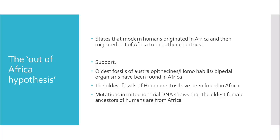Then we get to the out-of-Africa hypothesis, which states that modern humans originated in Africa and then migrated to other countries. Support includes: the oldest fossils of Australopithecines, Homo habilis, and bipedal organisms have been found in Africa; the oldest fossils of Homo erectus have also been found in Africa; and mutations in mitochondrial DNA show that the oldest female ancestors of humans are from Africa.